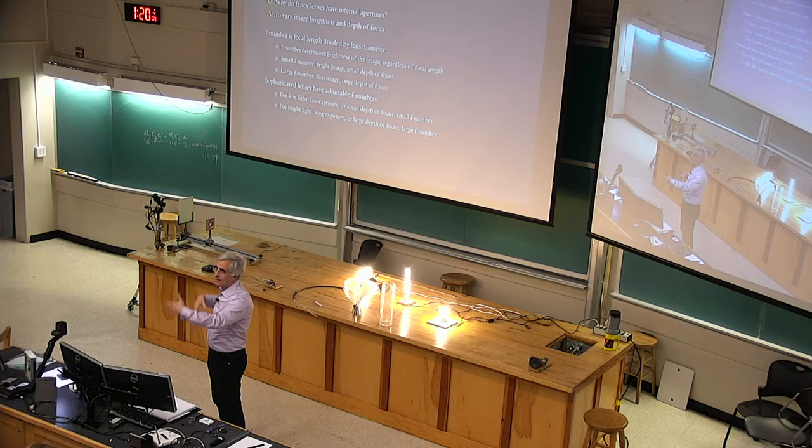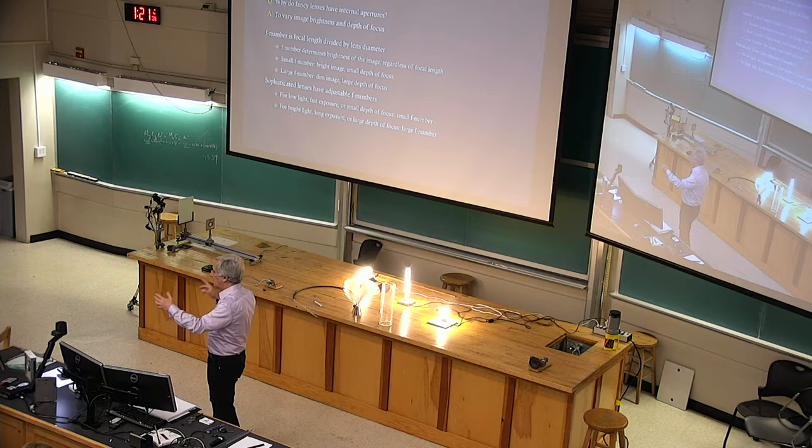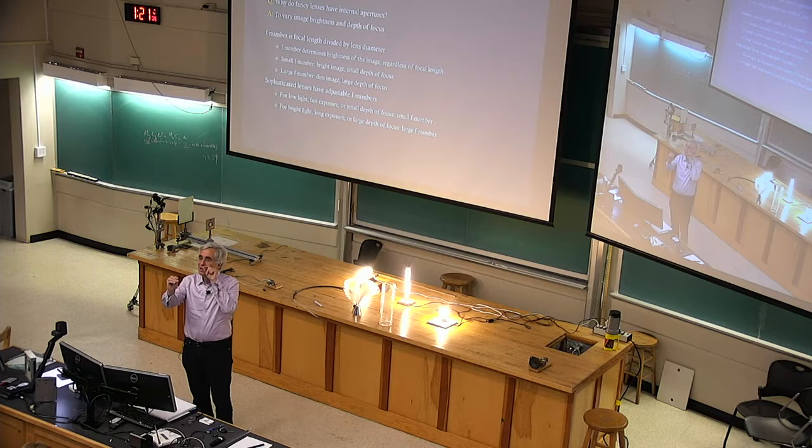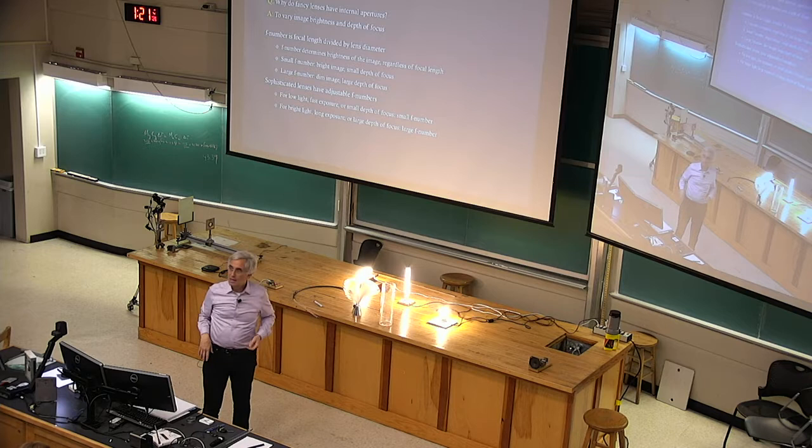For lenses that all have the same F number, regardless of their focal length, if you take the focal length divided by diameter, if it's four for example, you'll get the same brightness of image and the same depth of focus approximately. If you go to F number 16, they seem to go in powers of two. F number 16 means the focal length is much longer than the diameter of the lens. It's a tiny lens compared to the focal length. You get tremendous depth of focus. Everything's in focus - the mountains, the butterfly a foot in front of the camera. The image is dim however.